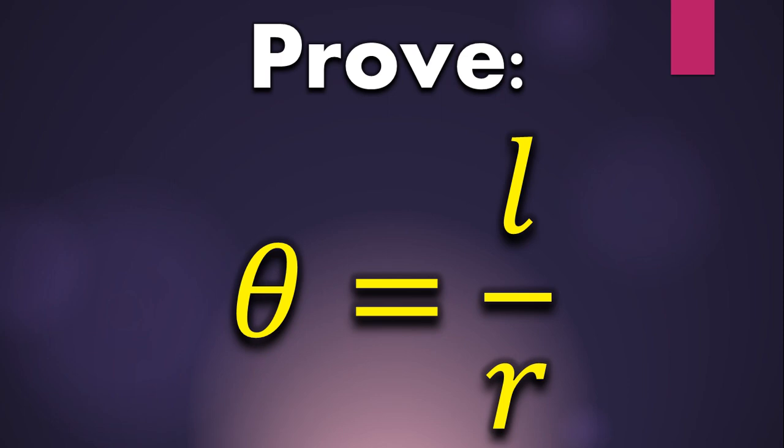Hello everybody, in this video we are going to prove that arc length in a circle is basically the product of the central angle that intercepts that arc and the radius of the circle. That is, L equals theta r, or theta equals L by r. So let's get started.